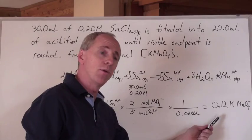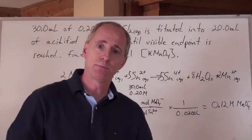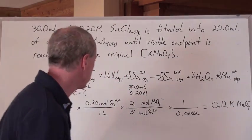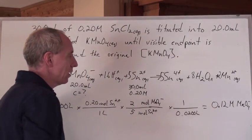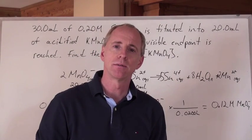The answer is 0.12 moles per liter, the permanganate ion in solution, or the potassium permanganate, the KMnO₄ in the solution. That is an example of solution stoichiometry, a redox titration.